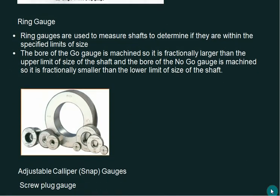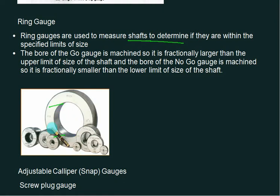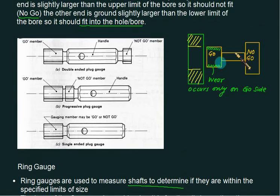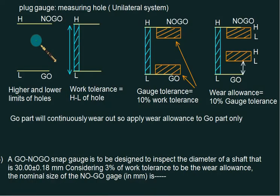The other type of gauges are called ring gauges. These are normally used to measure the dimensions of a shaft — to check whether shafts are within the specified limit or not. Here also the GO part will go around the shaft and wear will always occur on the GO part. So whether we have a ring gauge or plug gauge, wear is always going to occur on the GO side. Wear allowance will therefore be provided for the GO part.